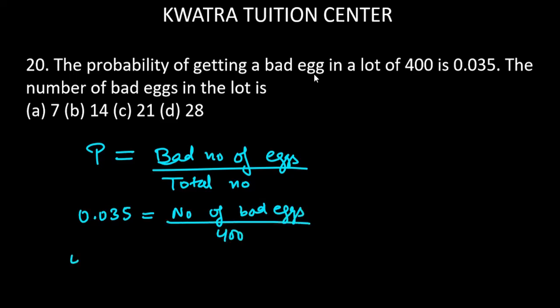So just multiply 400 with 0.035. If I remove zeros from here, I will get three zeros, and two zeros will cancel. What have you left? 4 into 35.